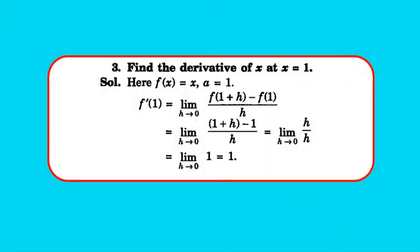Question 3: find the derivative of x at x = 1. Here f(x) = x, a = 1. Applying the first principle: limit h→0 of [f(1+h) - f(1)] / h = limit h→0 of [(1+h) - 1] / h = limit h→0 of h/h = 1. So the derivative of x at x = 1 is 1.